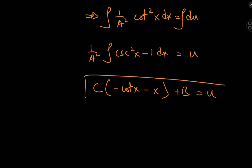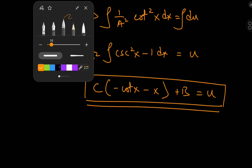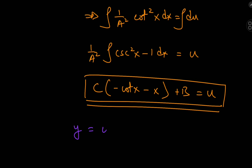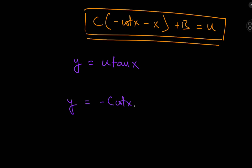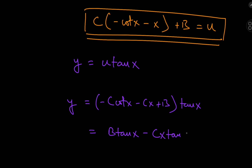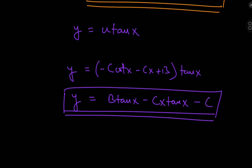Now recalling that y = u·tan(x), we substitute u to get y = (−c·cot(x) − cx + b)·tan(x). Expanding: b·tan(x) − cx·tan(x) − c·cot(x)·tan(x). Since cot(x)·tan(x) = 1, the last term is just −c. So the general solution is y = b·tan(x) − cx·tan(x) − c.